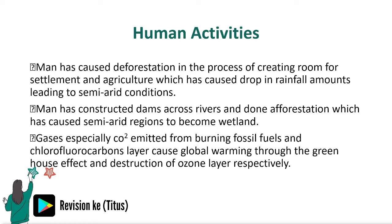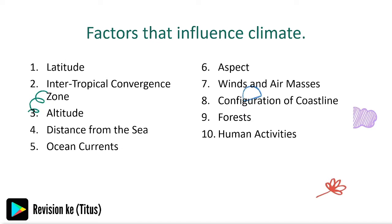Human activities: man has caused deforestation in the process of creating room for settlement and agriculture, which has caused a drop in rainfall amounts leading to semi-arid conditions. Man has also constructed dams across rivers and done afforestation, which has caused semi-arid regions to become wetlands. These are the factors that influence climate.